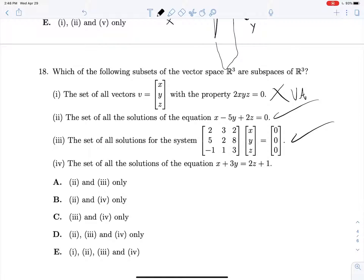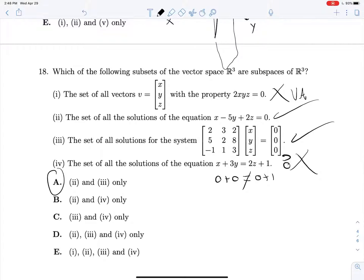And then 4, what about this thing? Well, this is a plane, but it's not a plane through the origin. It doesn't include the 0 vector. 0 plus 0 is equal to 0 plus 1. No, that's not true, so we don't include the 0 vector. And 2 and 3 is our correct answer.